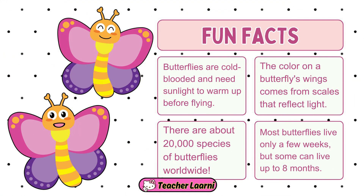Here are some fun facts about butterflies. Butterflies are cold-blooded and need sunlight to warm up before flying. The color on a butterfly's wings comes from scales that reflect light. There are about 20,000 species of butterflies worldwide. Most butterflies live only a few weeks, but some can live up to 8 months.